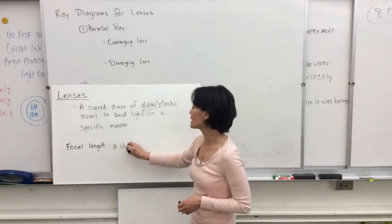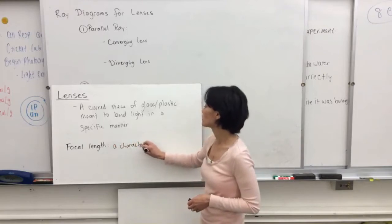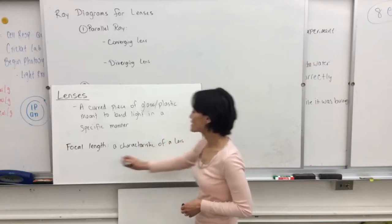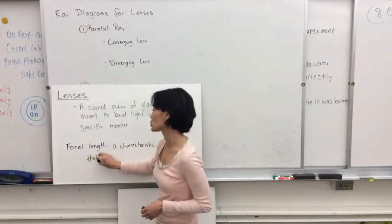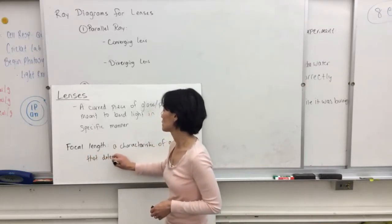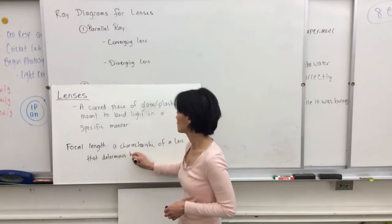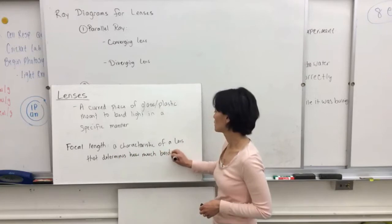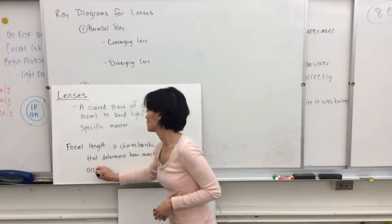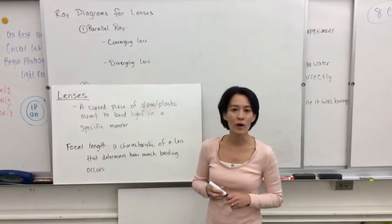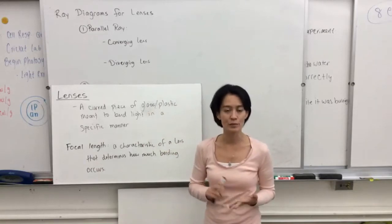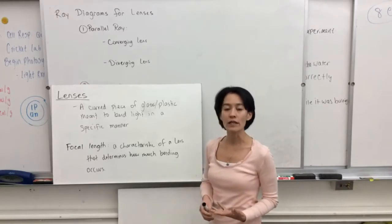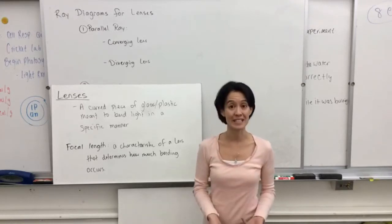The focal length is a characteristic of a lens that determines how much bending occurs. It depends on what the lens is made of — glass, plastic, or some composite material — and it also depends on the curvature of the lens and the thickness of the lens.